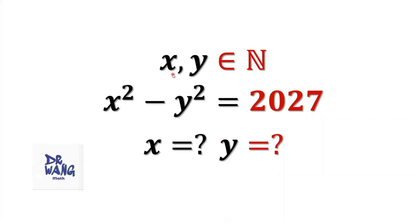If x and y are positive integers and x squared minus y squared equals 2027, what are the values of x and y?